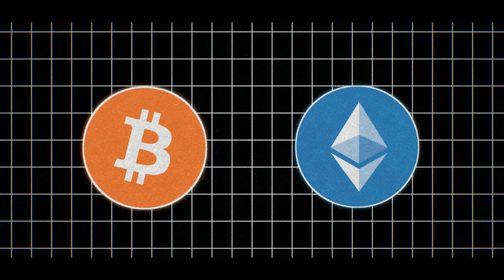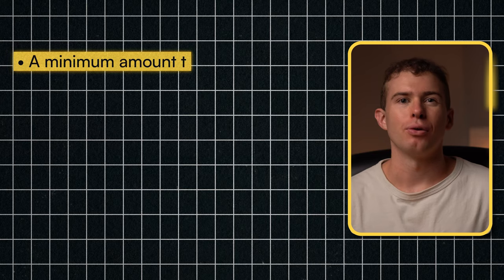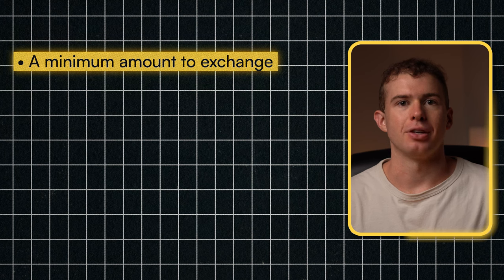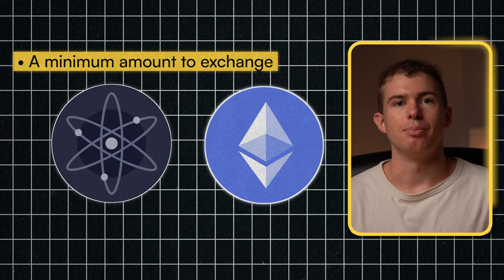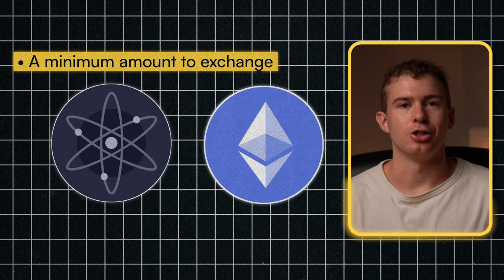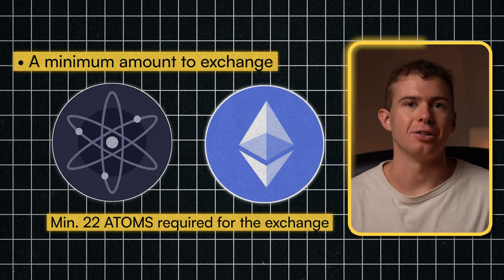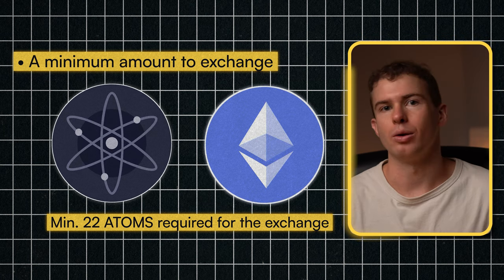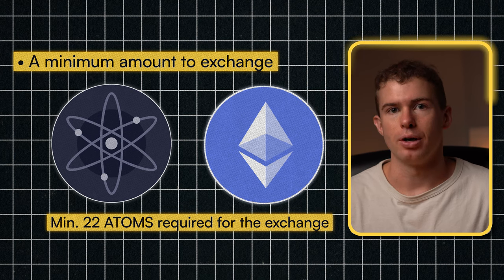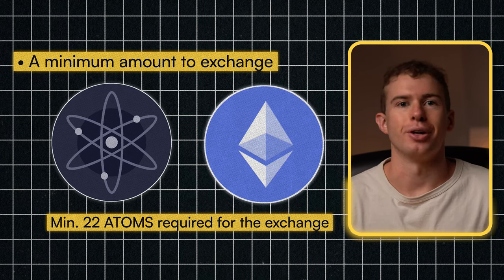You can also exchange your crypto directly on the platform. If you had a thousand dollars worth of Bitcoin, you can convert that into Ethereum. There is a fee for this and it depends on what crypto you're exchanging, and there's often a minimum amount that you have to exchange. For example, if I wanted to exchange my Atom into Ethereum, there's a minimum of 22 Atom required — you can't just exchange one or two Atom.